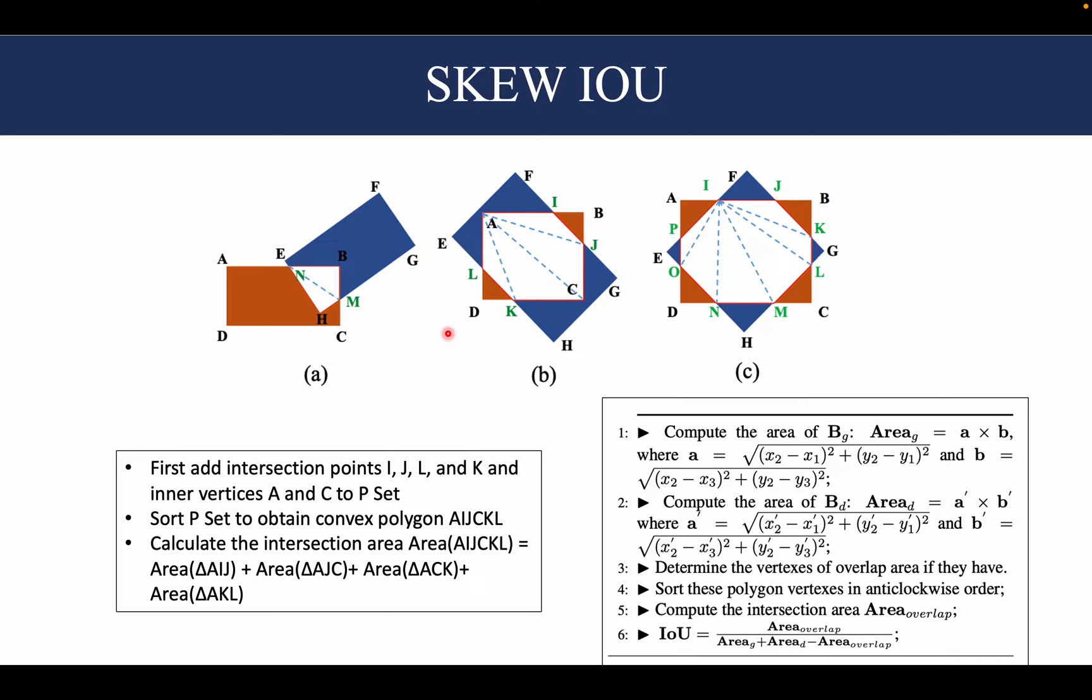And in another previous video in the playlist, we saw that when we were facing similar problems with the LN regression loss for horizontal object detection, how we migrated to using IOU-based losses like GIOU, DIOU, and CIOU to overcome them. So a logical next step in this problem would be why not use IOU-based losses here also.